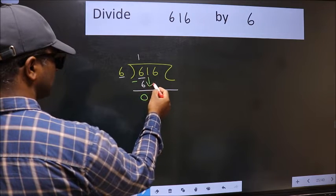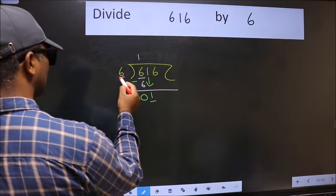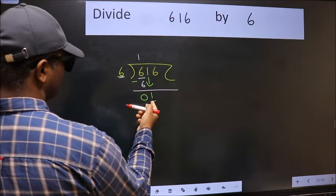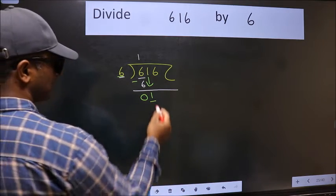After this, bring down the beside number. So 1 down. Now here we have 1 and here 6. 1 is smaller than 6, so we should bring down the second number.